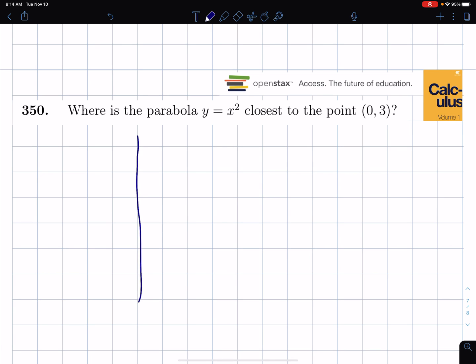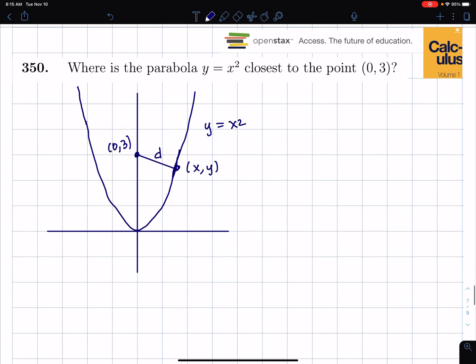So to understand that it might be a lot better to draw a picture first of all of the graph. So here's y equals x squared right there and we have the point (0,3) and we're trying to find a point (x,y) that's closest to (0,3). And what I do is I draw a line segment there and I call the length of that line segment d and what we do is we find (x,y) such that d is a minimum value.